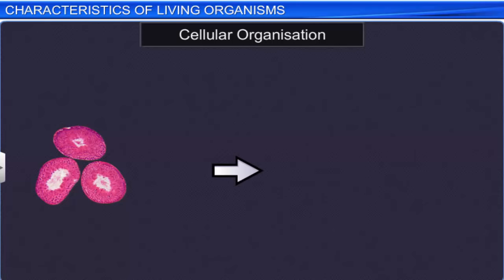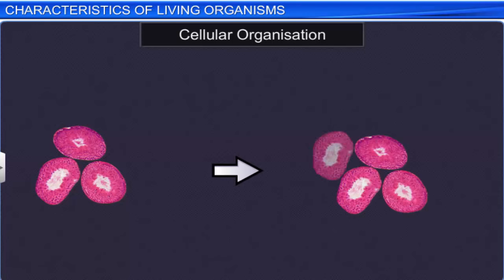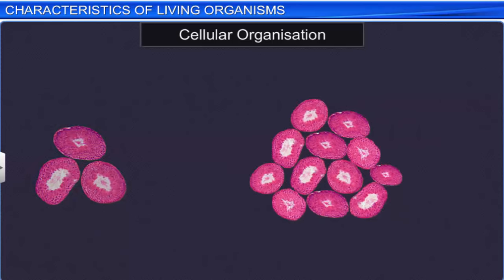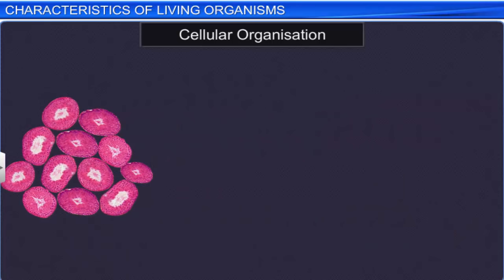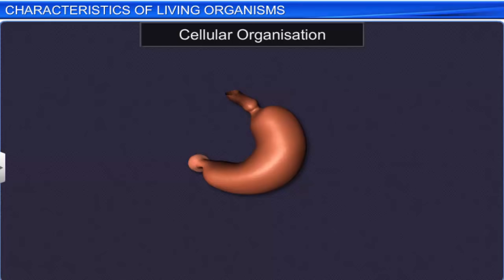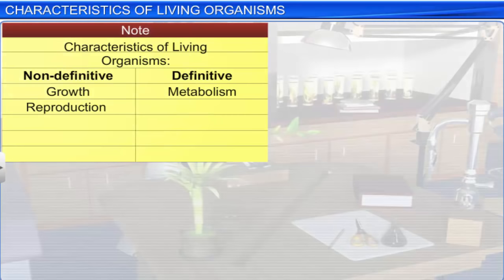Cellular organization is another important characteristic of living organisms. Such organization is not observed in the non-living. And hence, cellular organization is also a definitive feature in all life forms.